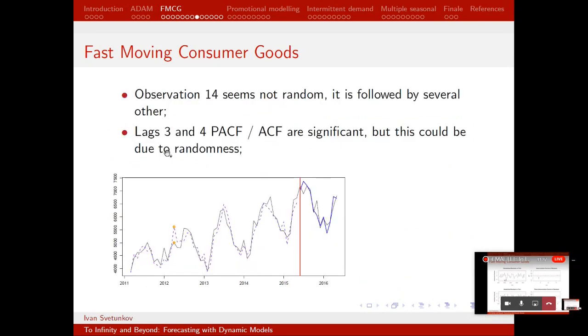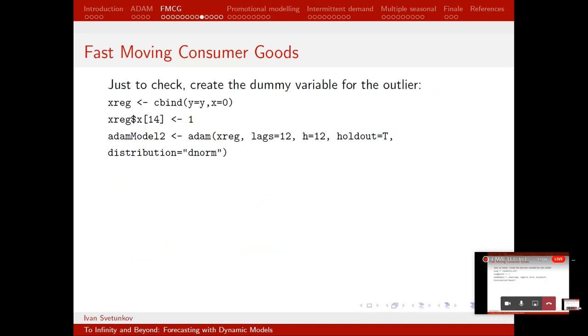This is the same fit as before, and we can see the orange dots. One corresponds, well, they correspond to the observation 14. So this is the case where the model actually had much higher value than it should have had. So what can we do with this? Can we do something with this observation 14? Well, we can just check whether this is an outlier or not, something like that. We can create a dummy variable, and here comes some elements of dynamic model, I guess. We create dummy variable, which is equal to zero everywhere, but on 14th observation.